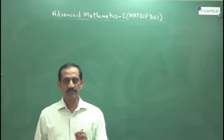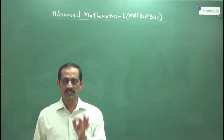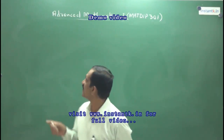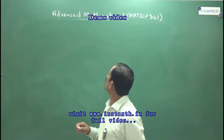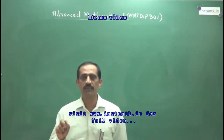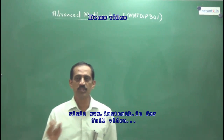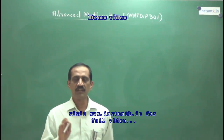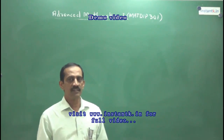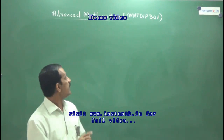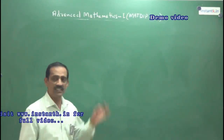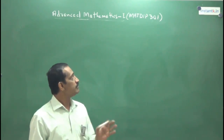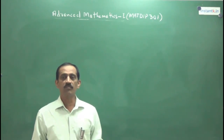In third semester, you have to complete one subject: Advanced Mathematics 1, that is MAT DIP 301. In the next semester, fourth semester, you have to complete Advanced Mathematics 2, which has subject code MAT DIP 401.